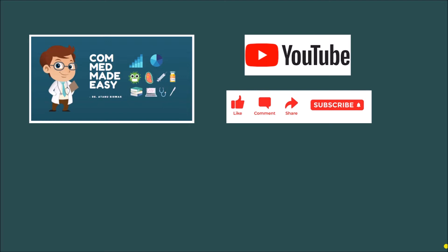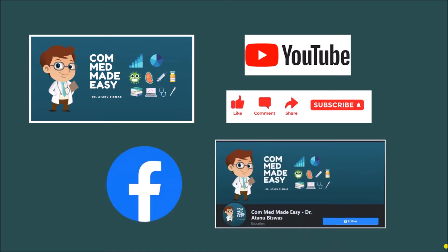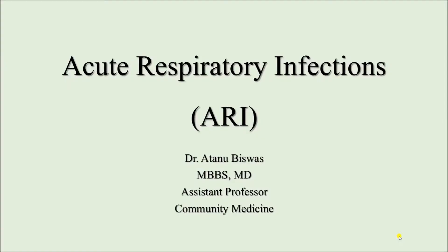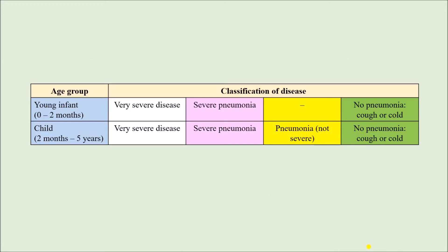Share these videos with your batchmates, juniors, and if you are a teacher, with your students. Please follow our Facebook page — the link will be given in the description. In our last video we discussed the classification of ARI in the age group 2 months to 5 years. Today we shall classify the disease for the age group 0 to 2 months.